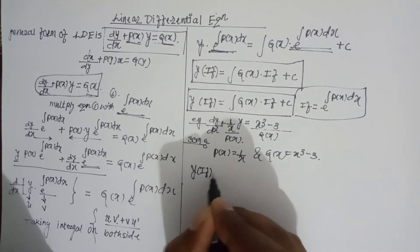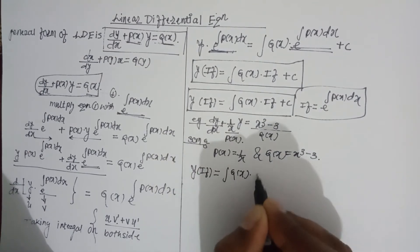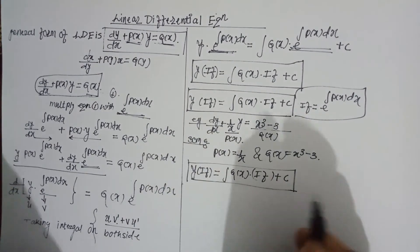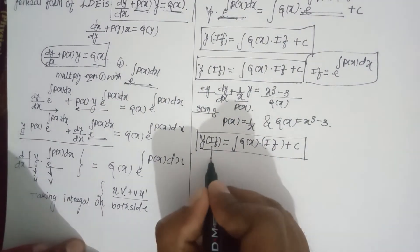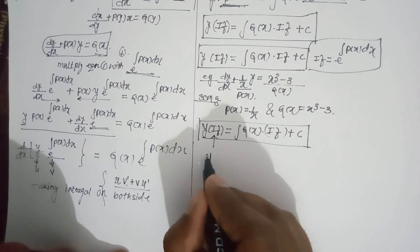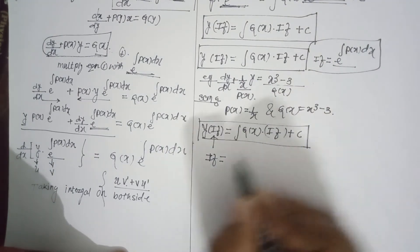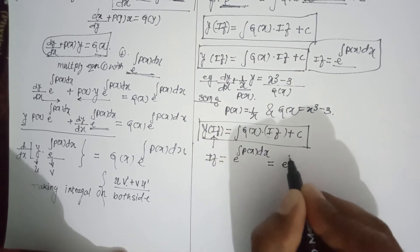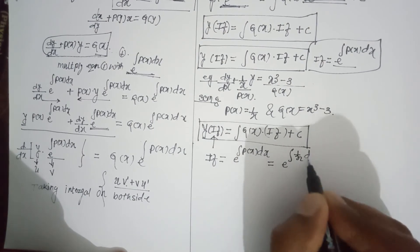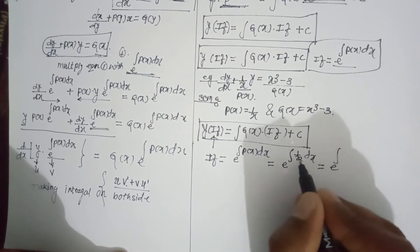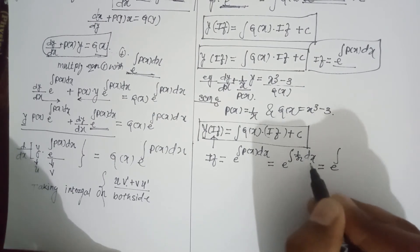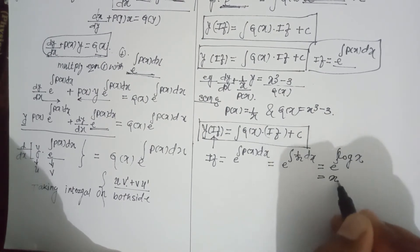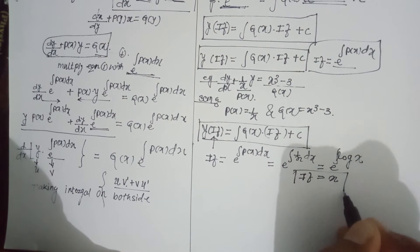The general solution is y into integrating factor equals integral of Q(x) into integrating factor plus C. We need to find the integrating factor: IF = e^∫P(x)dx = e^∫(1/x)dx. Now the integral of 1/x is log x, so IF = e^(log x). Since e and log cancel, the integrating factor equals x.